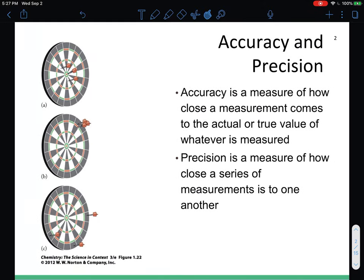Accuracy is the measure of how close a measurement comes to the actual or true value of what is measured. Precision is a measure of how close a series of measurements is to one another. So accuracy, you want to get as close to that true value or as close to the bullseye as possible, and precision is really just consistency in the dart throws for this example.